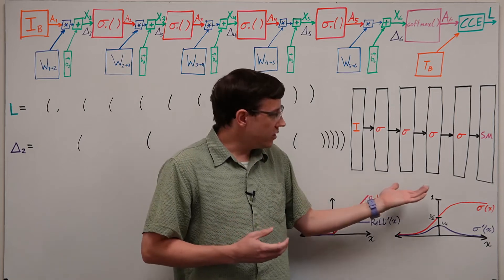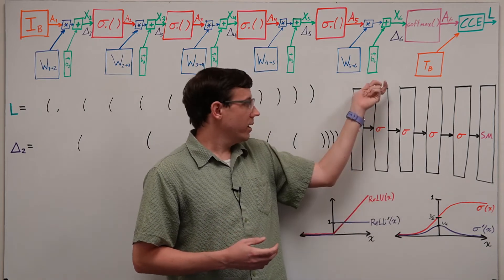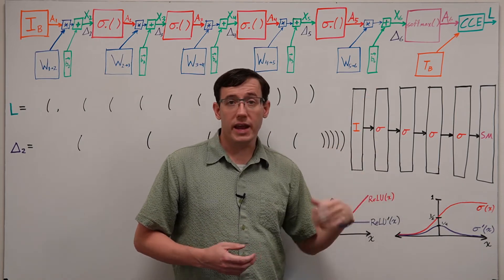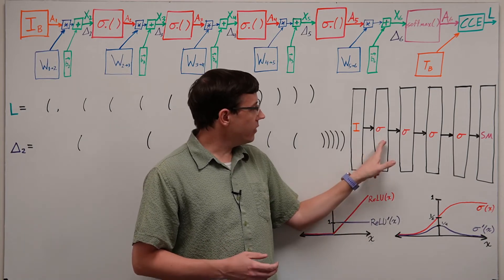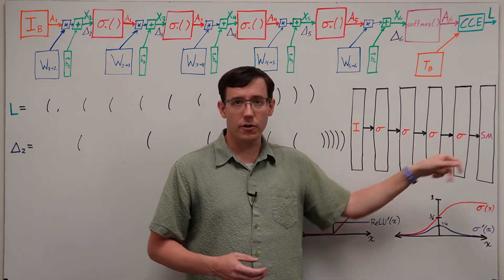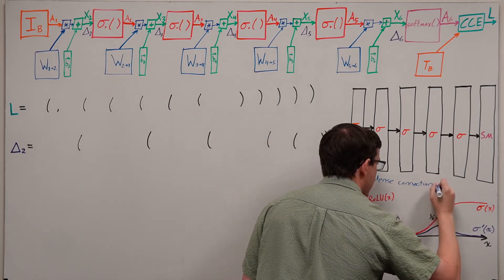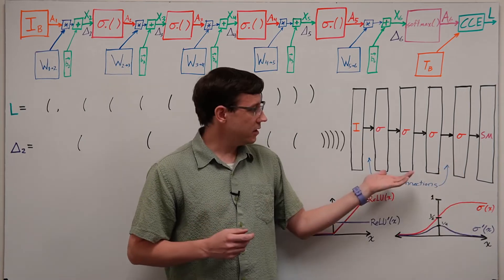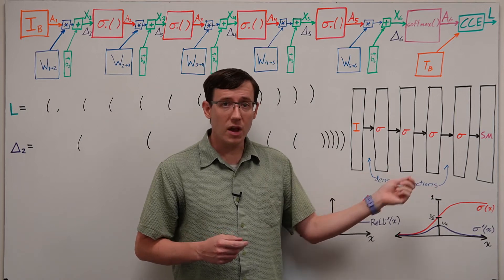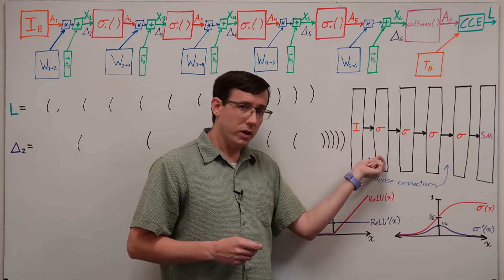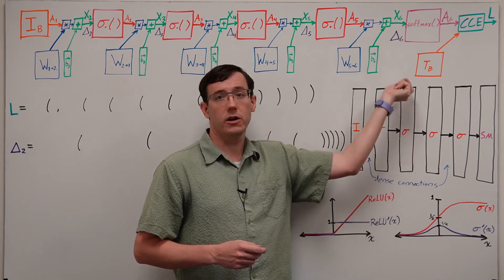So here I've switched to a block diagram where each column represents a layer of the network and we've indicated the activation functions within each block. And for now we'll still assume dense connections, meaning that every node in one layer is connected to every node in the next.